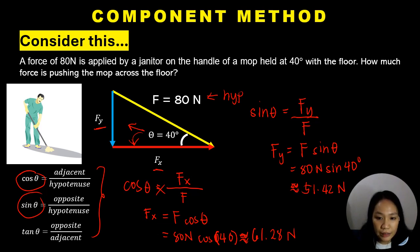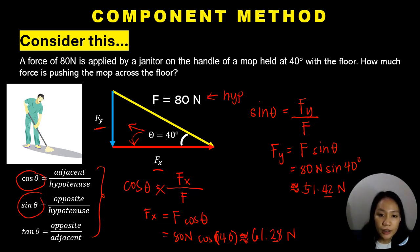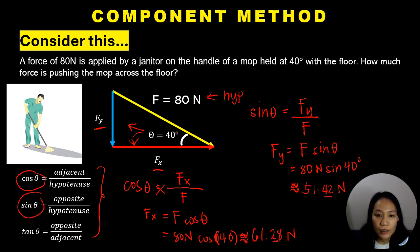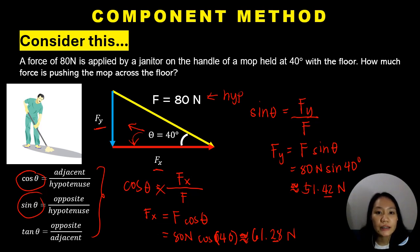The answers are rounded off to two decimal places. Comparing these values with the answers obtained through the graphical method, the component method is more accurate because it considers decimal points and limits human error in measurement.